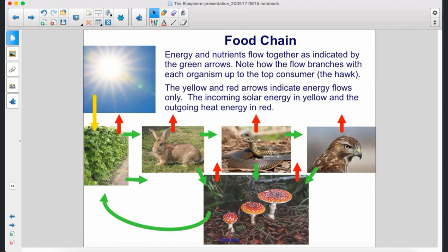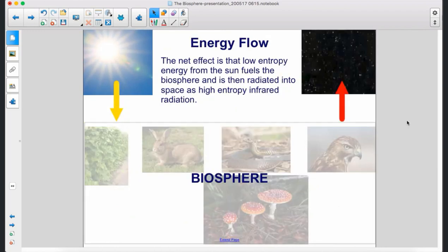The yellow and red arrows indicate energy flows only. The incoming solar energy in yellow and the outgoing heat energy in red. The net effect is that low-entropy energy from the sun fuels the biosphere and is then radiated into space as high-entropy infrared radiation.